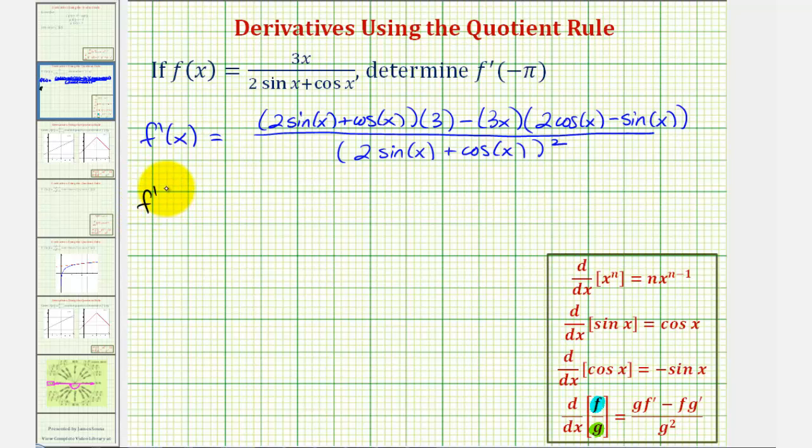So f prime of negative pi would be the same quotient here with x replaced with negative pi. Our denominator is going to be two sine negative pi plus cosine negative pi, all squared.